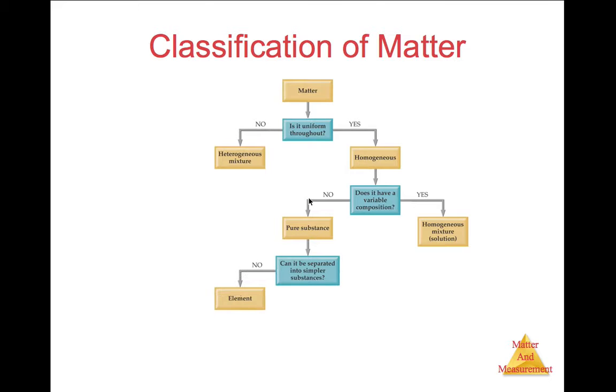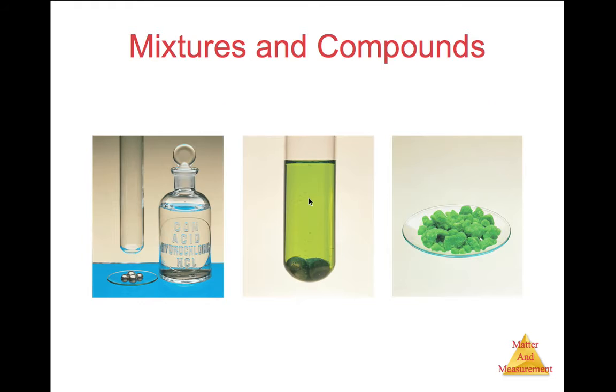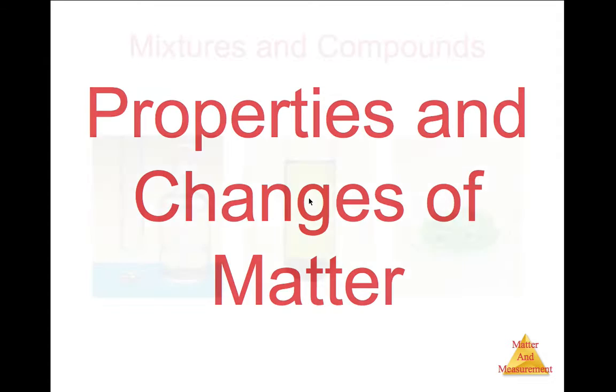If pure substances cannot be separated into simpler substances, then we call it an element. And if it can be separated into simpler things, then we call it a compound. Here are several examples of mixtures and compounds.